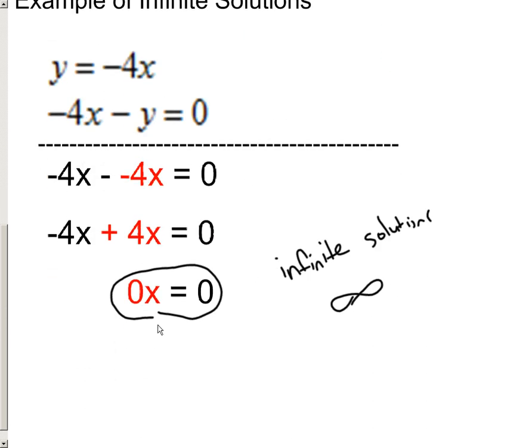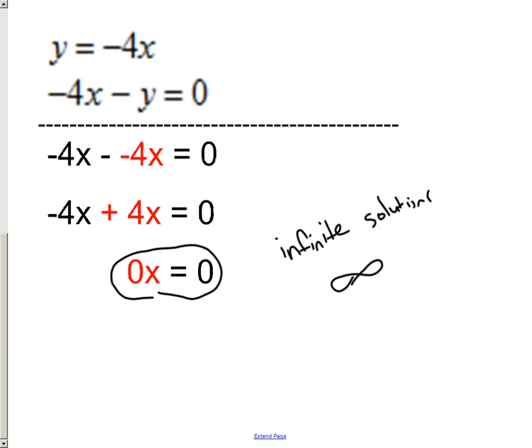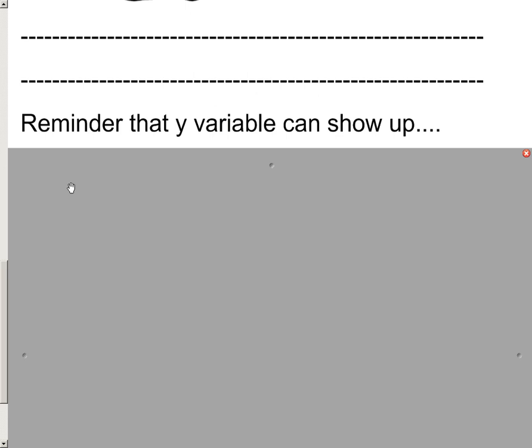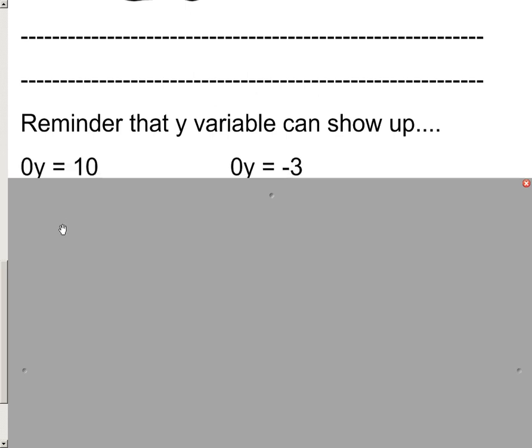I'm also going to show you one other situation. As I said, it did not have to be an x variable. It could also be a y variable. So let's look at this. Instead of an x, what if it was 0 times y equals 10? Well, could I times 0 by any number to get 10? No. So this would be a no solution setup right here. It's when 0 times a variable equals a number that's not 0, we would say that's no solution. Same thing over here. I can't multiply 0 by anything to get negative 3. It's always going to be 0. So this is going to be a no solution setup.